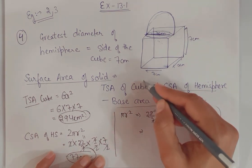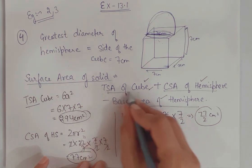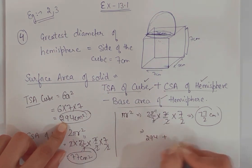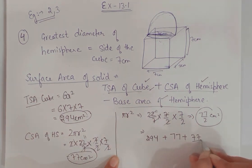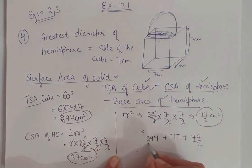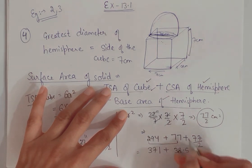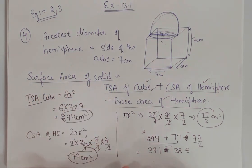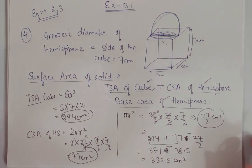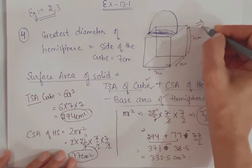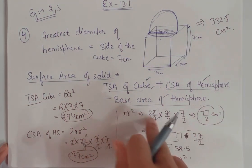Now we have all three values needed. Total Surface Area of cube = 294, Curved Surface Area of hemisphere = 77, and Base area = 77/2. Putting these into the formula: 294 + 77 − 38.5 = 332.5 cm². So the total surface area of this solid is 332.5 cm². That is the answer to question number 4.